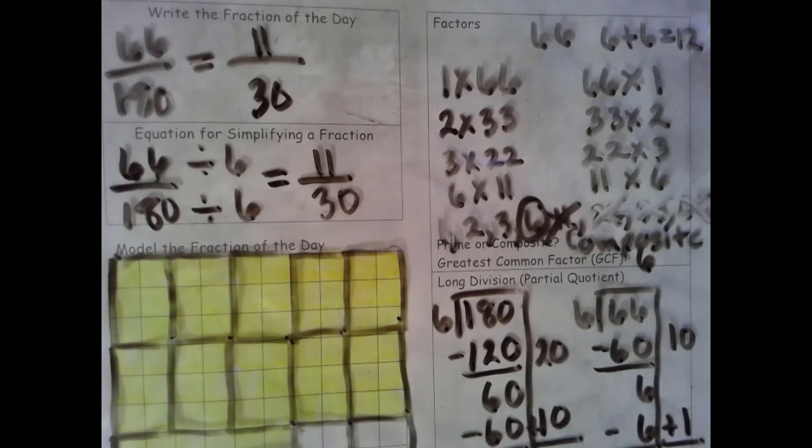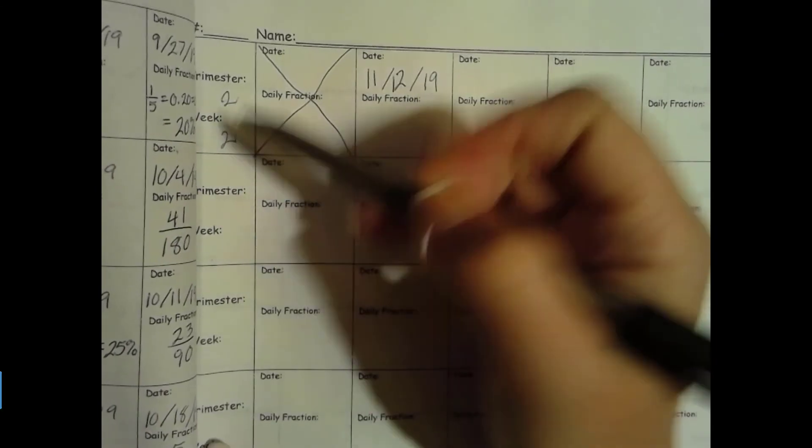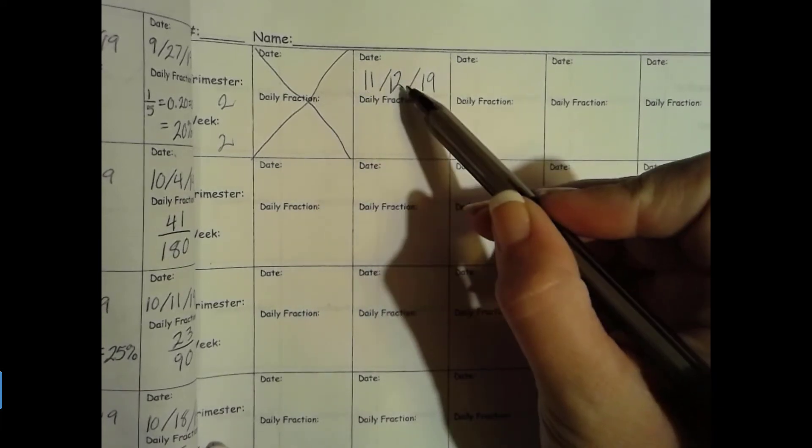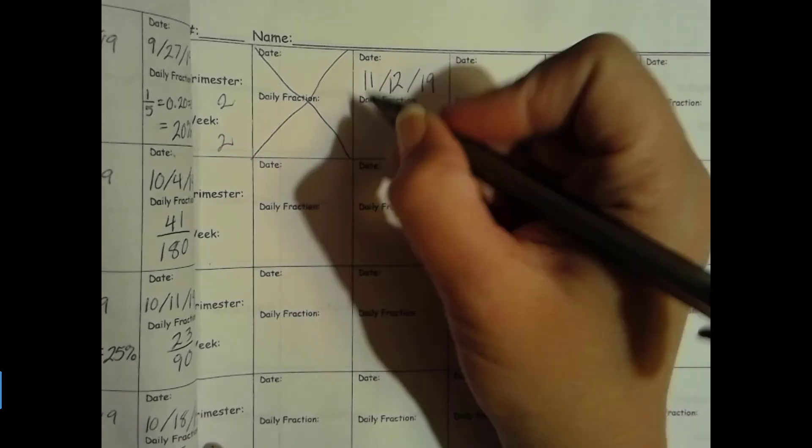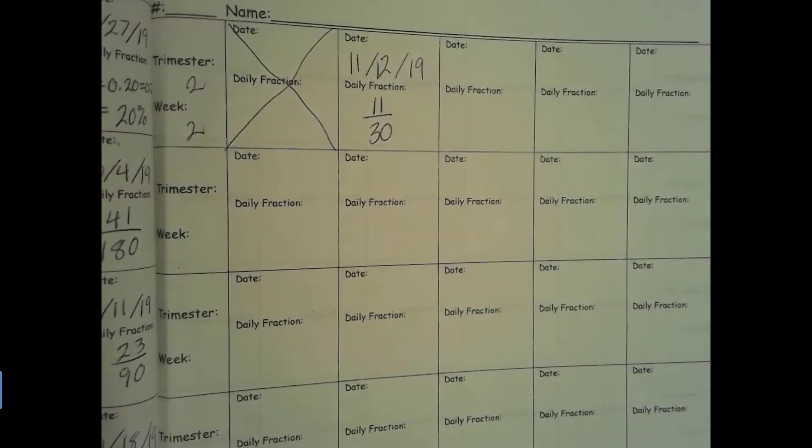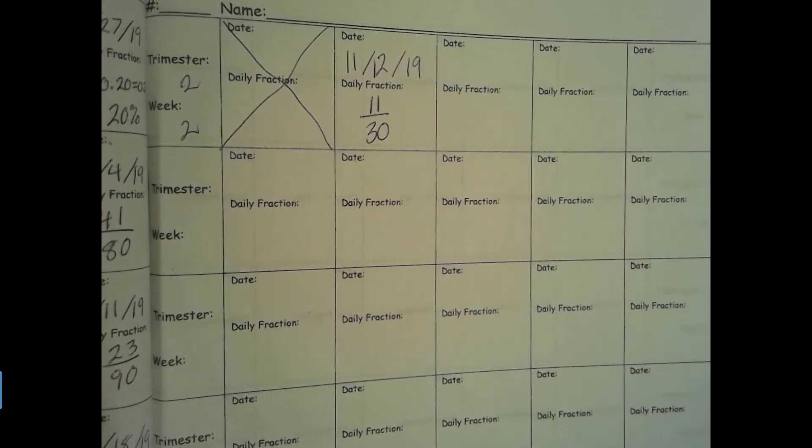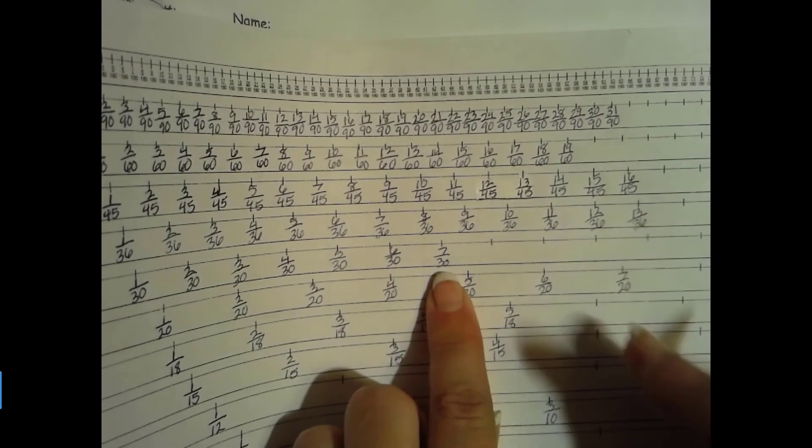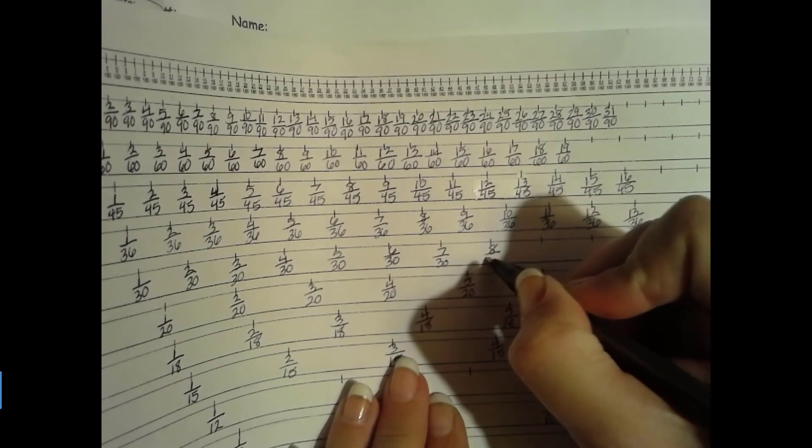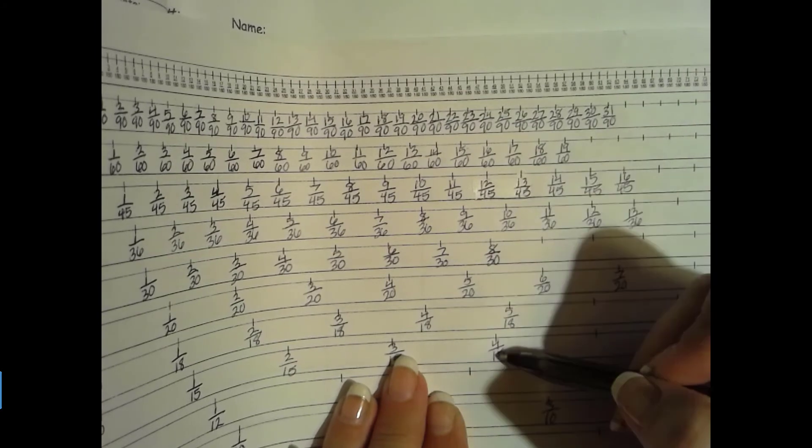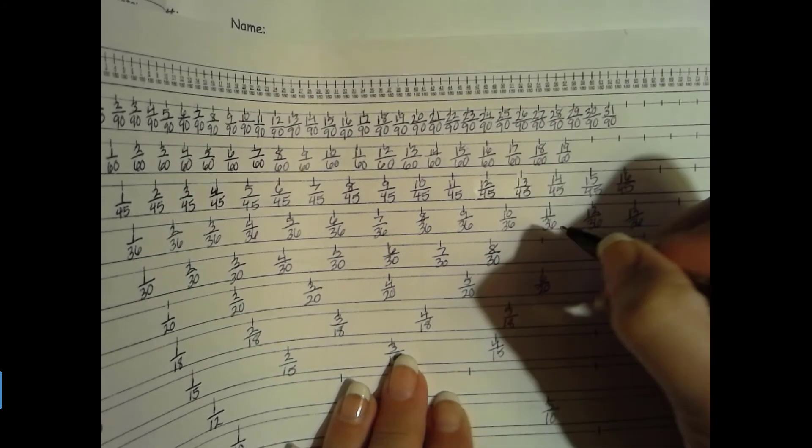Alright let's go ahead and fill in our data collection page. We're in trimester 2 now week 2. We had no school yesterday for Veterans Day. Today is 11/12/19. Today is the 66th day of the school year. Go ahead and get out your number line. We did groups of 6. So the last one we have is 7/30ths and then 8/30ths is equivalent to 12/45ths, 16/60ths, 24/90ths and 4/15ths is the simplest form.